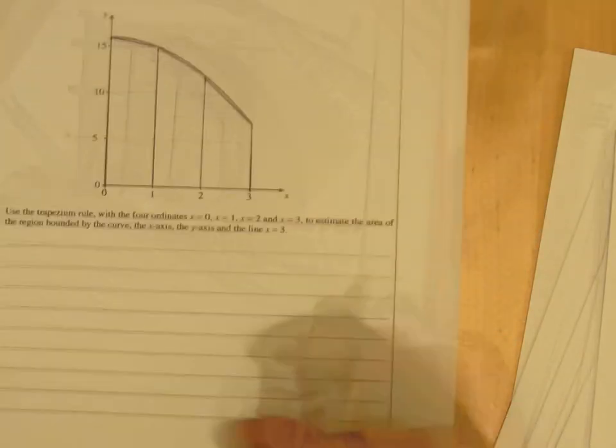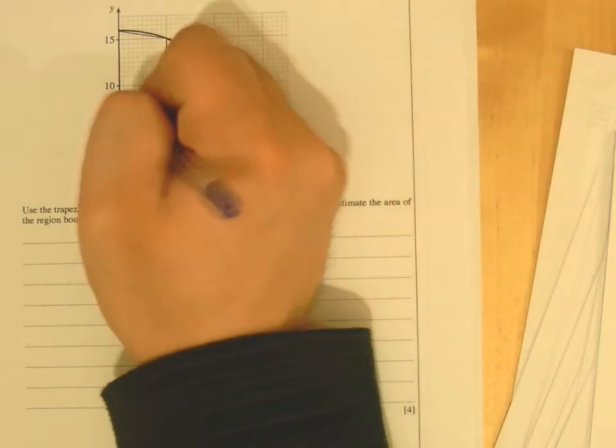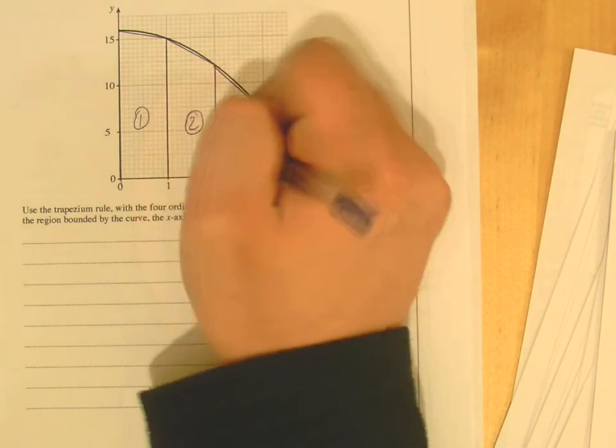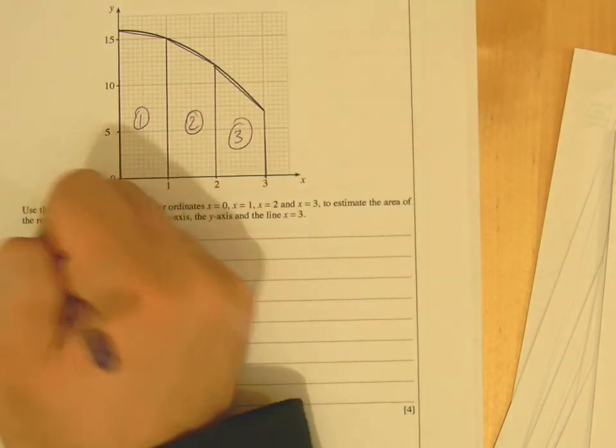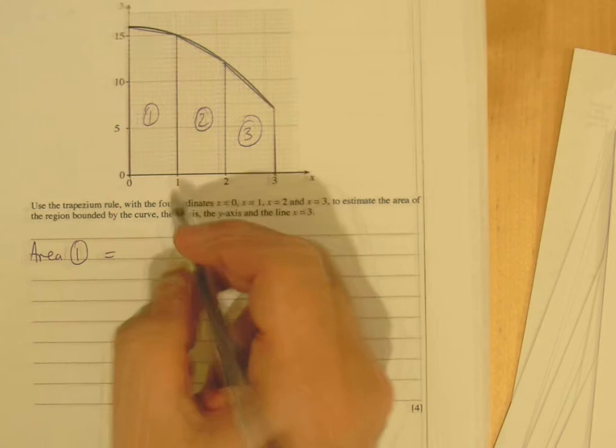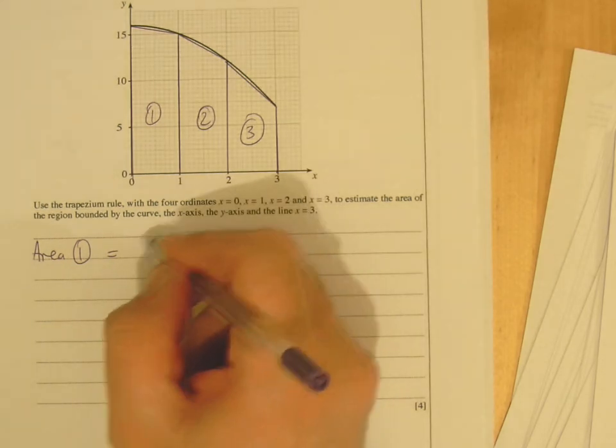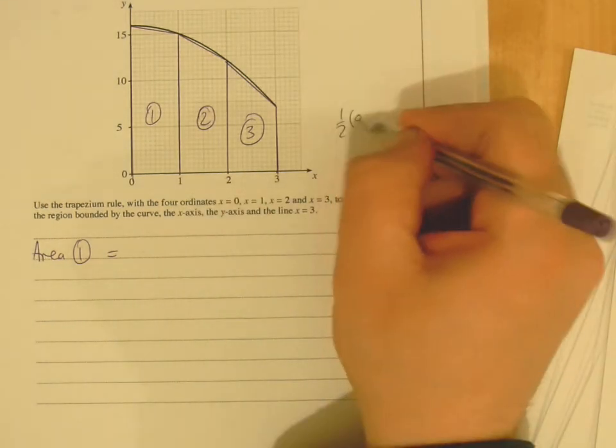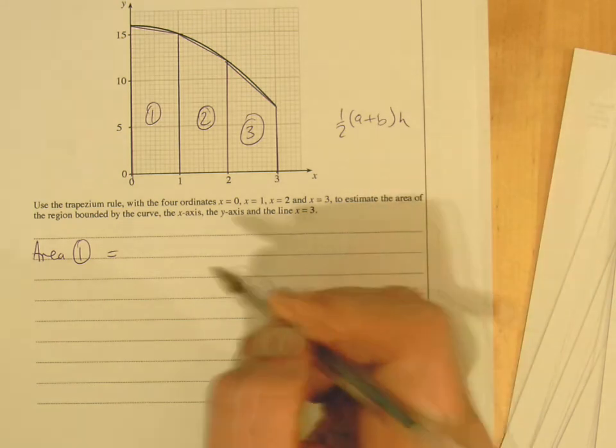Okay, and then I call them, it's up to you what you want to call them, I call them trapezium 1, trapezium 2, trapezium 3. Okay, so area then of 1, now the trapezium rule is given, the formula for trapezium is half a plus b times h, that's given to you on the front page.